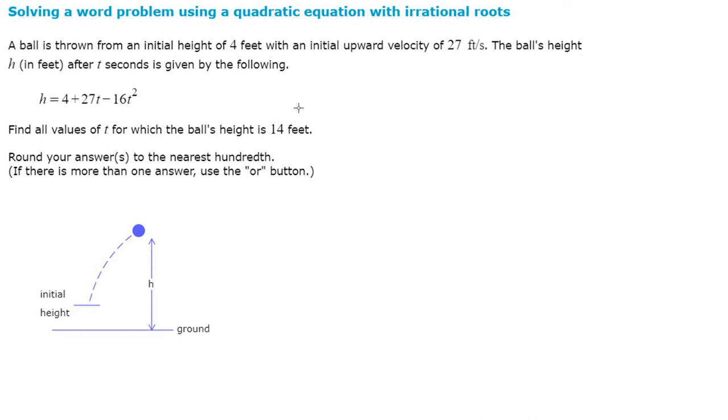A ball is thrown from an initial height of 4 feet with an initial upward velocity of 27 feet per second. The ball's height h in feet after t seconds is given by the following: h equals 4 plus 27t minus 16t squared.